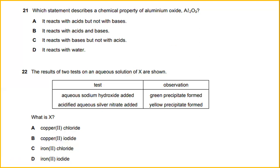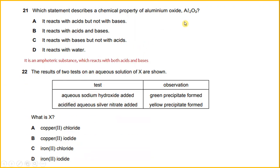Which statement describes a chemical property of aluminium oxide? It is an amphoteric substance which will react with both acids and bases. So the answer would be B: it reacts with acids and bases.